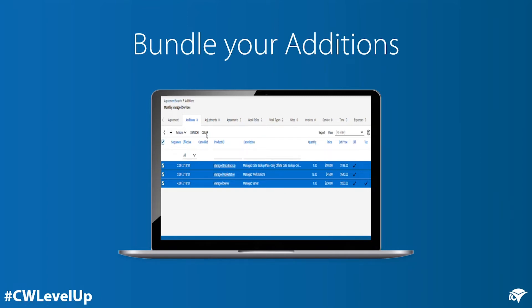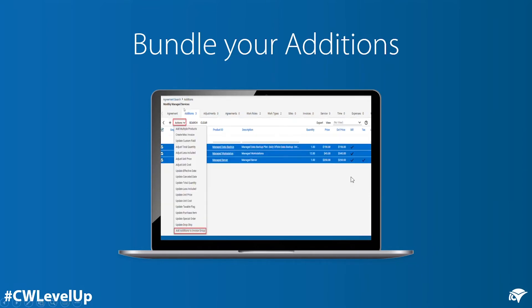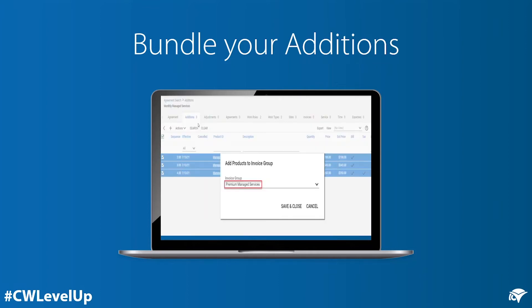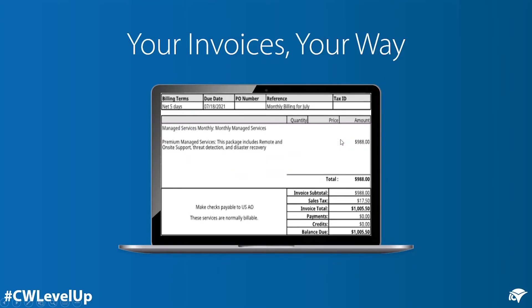If you are doing this from an agreement, you'll mass-select your addition records, select the actions, select Add Additions to Invoice Group, select the group you created in the previous step, and then Save. On the resulting invoice, I chose to only show the invoice group and not the itemized breakdown of services. However, your invoice group choices may differ based on your business requirements.